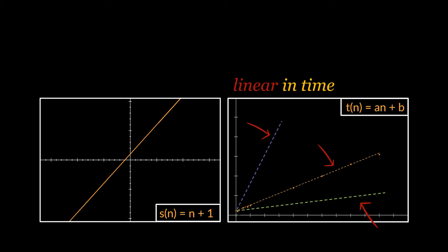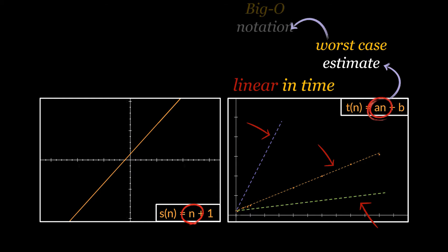What actually changed was the a and b variables in a·n + b, but the linearity was preserved, and that information is what we are looking for. So instead of writing a bunch of mathematical functions, we estimate the need of our program by stating the highest order of these functions — also referred to as the worst-case estimate of the space and time needed to execute a block of code, also known as Big O notation. Our space complexity will be O(n) since n + 1 has n to the power 1 as its highest order.